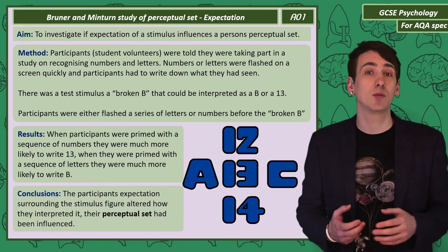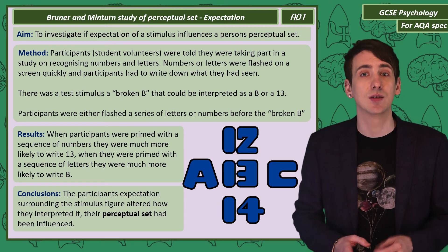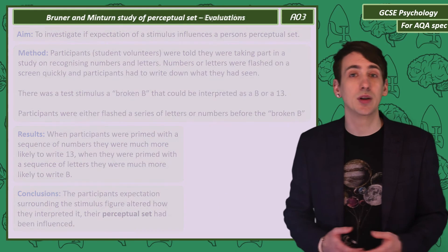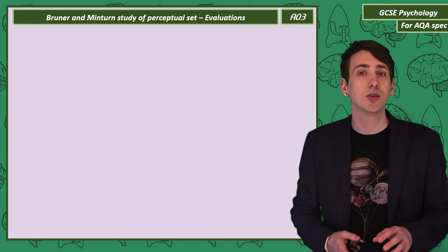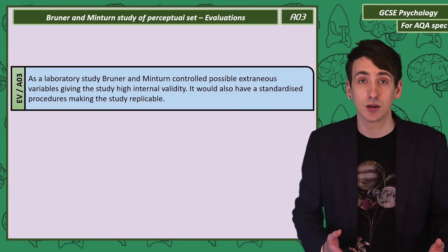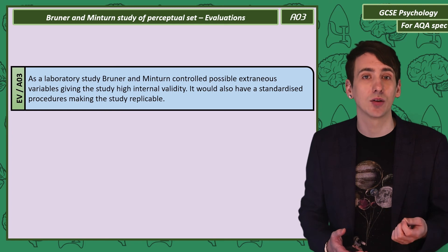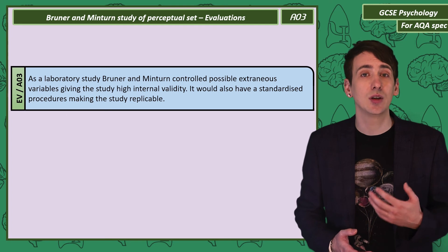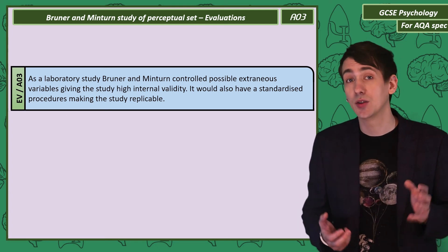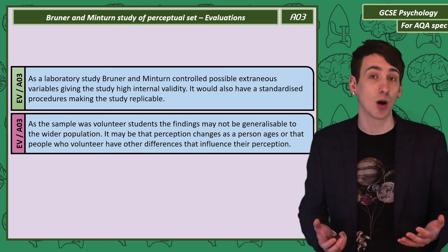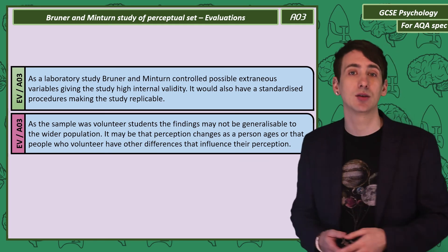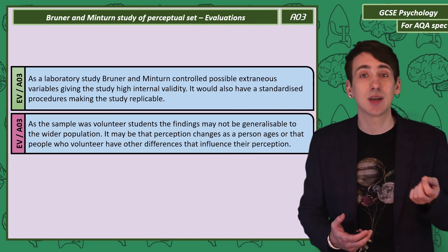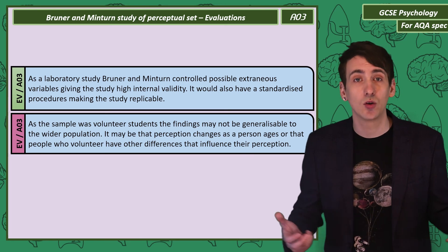The conclusion was that participants' expectations influenced their perceptual set, changing how they interpreted the broken B. Evaluating Brunner and Minton's study positively, it was a lab study so potential extraneous variables were highly controlled, giving high internal validity. Standardised procedures were used, making the study easy to replicate. However, the study used students as volunteers, which is a problem as perception may change as people age, and people who volunteer might have differences in perception, potentially making the findings on perceptual set ungeneralisable.